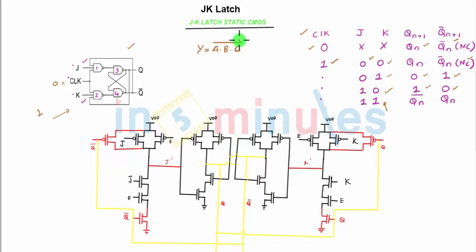If you observe this, this is NAND1 where you see three NMOS transistors in series and three PMOS transistors in parallel. You see that NAND1 has inputs J, enable or clock, and Q bar.